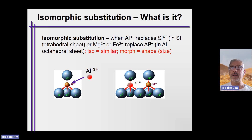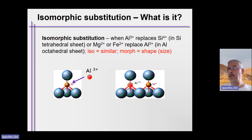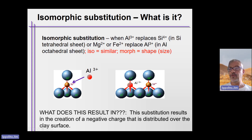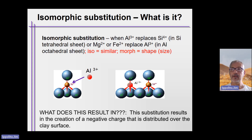Another way of saying this is that you gain a negative charge. This is the premise behind isomorphic substitution leading to an overall negative charge on clay particles. This substitution results in the creation of a negative charge that is distributed across the clay surface — it's not localized — because of the atoms being shared amongst the sheets.